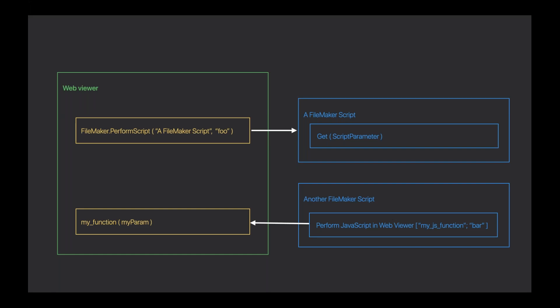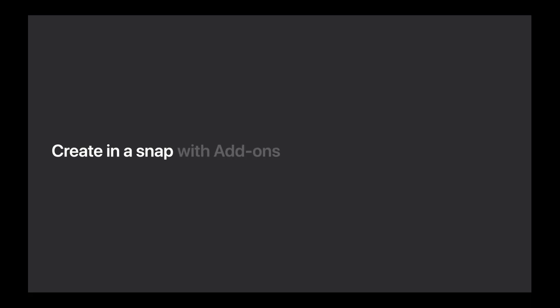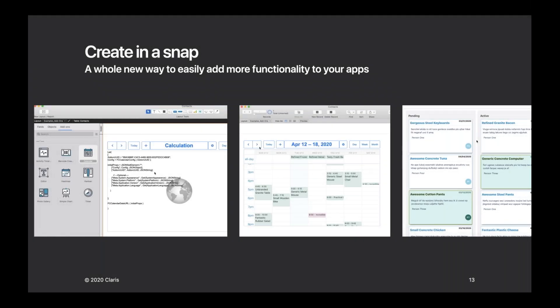That's a quick view at JavaScript integration in Claris FileMaker 19. I understand that not everyone has JavaScript skills or the time to learn a new language — and remember, the Claris vision is powerful technologies to everyone. This is where add-ons come into play. Add-ons are reusable, modular components that anyone can create to easily add more functionality to their apps. They can be easily shared with others, and you'll find new add-ons coming soon in the Claris Marketplace to quickly snap into your custom apps.